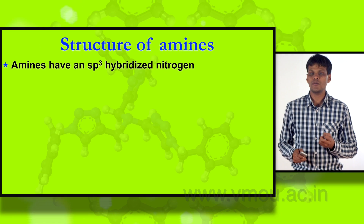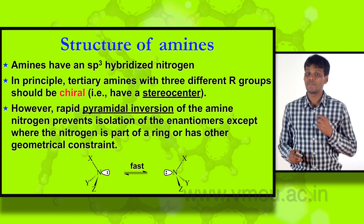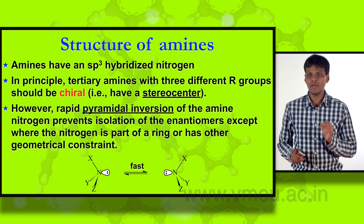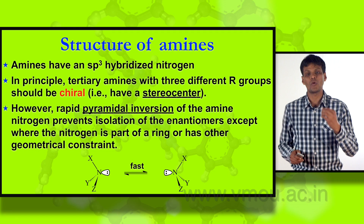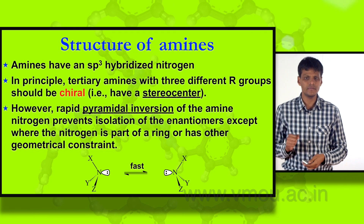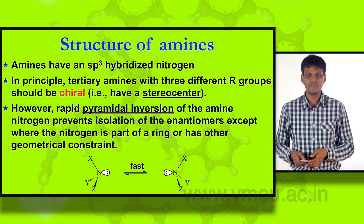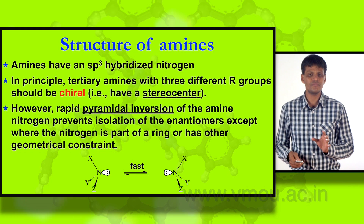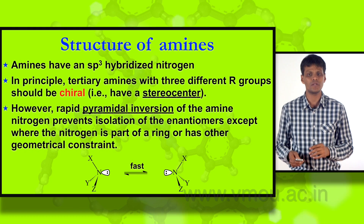If we see the geometry and structure of amines, we find nitrogen as a central atom bonded with three hydrogen atoms, and nitrogen has one lone pair of electrons. According to VSEPR theory, lone pair–lone pair repulsion is greater than lone pair–bond pair repulsion, which is greater than bond pair–bond pair repulsion. In ammonia, nitrogen is sp3 hybridized. We also see pyramidal inversion of ammonia, where the lone pair shifts rapidly and forms an enantiomer — a non-superimposable mirror image.